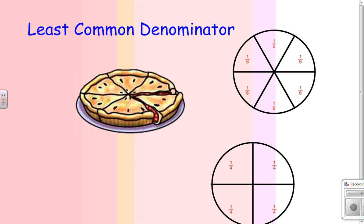A least common denominator is the least common multiple of two different denominators.